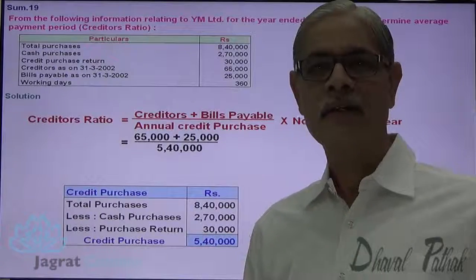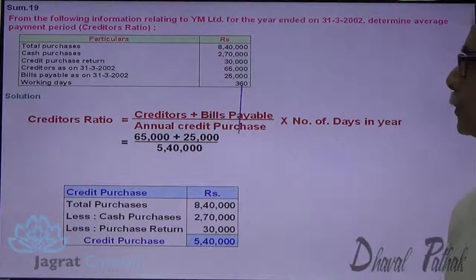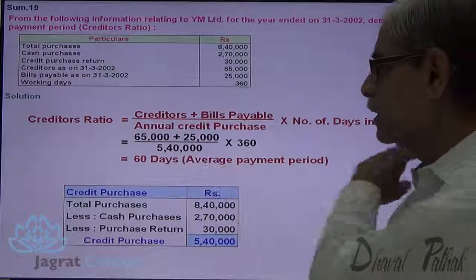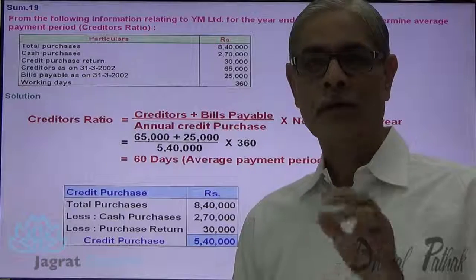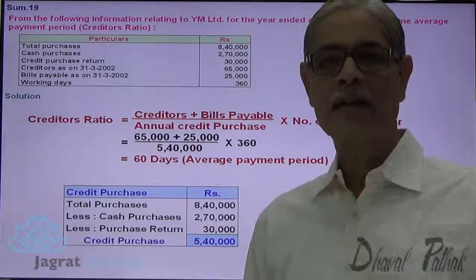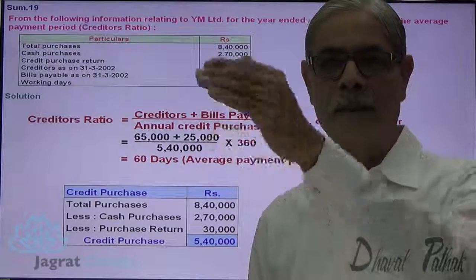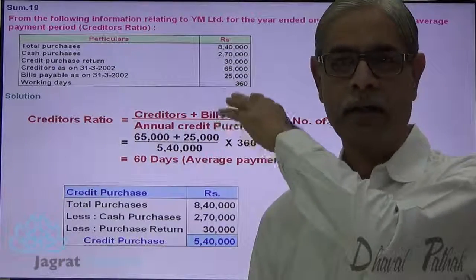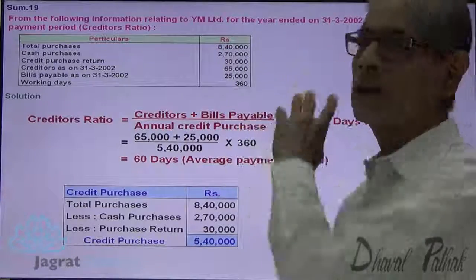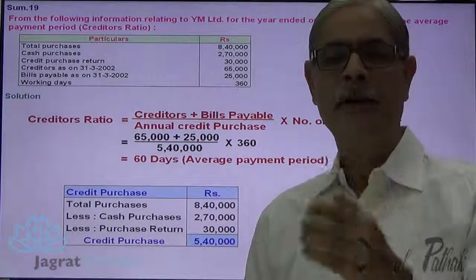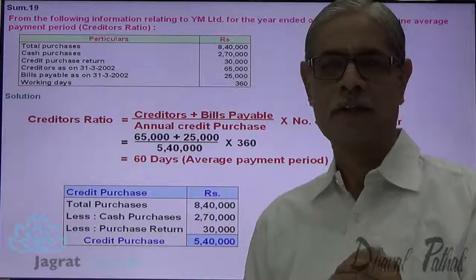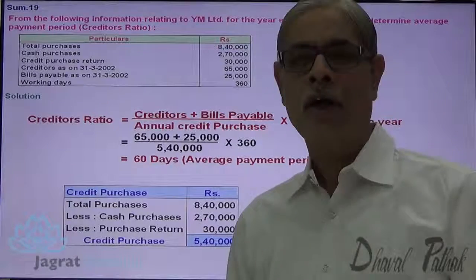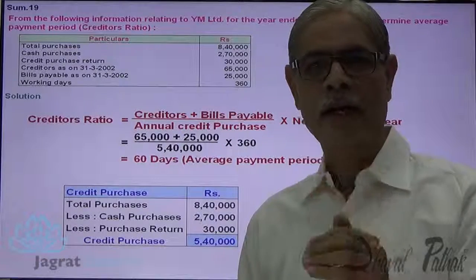If the number of working days is not specified, we should take 365 days. The result is 60 days, which is the average credit payment period, also known as the creditors ratio. This means that in the current year ending 31st March 2002, we made payment to the supplier on average within 60 days.